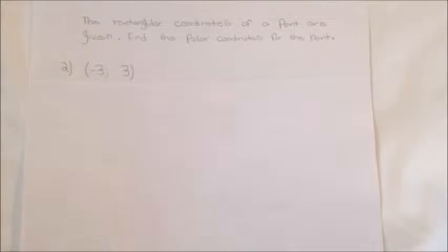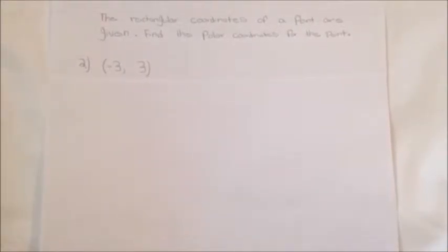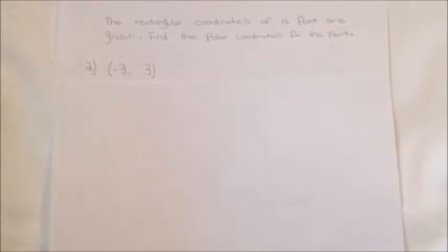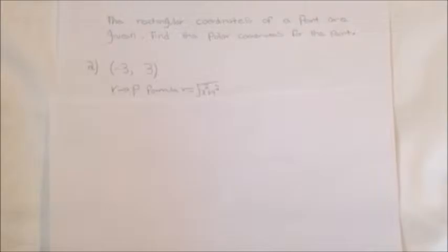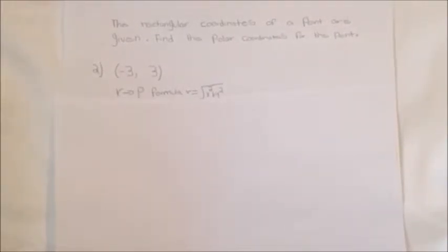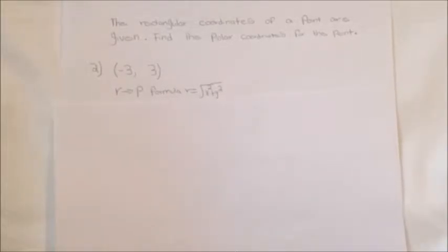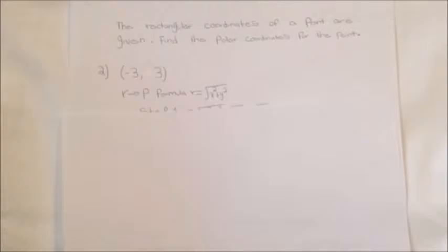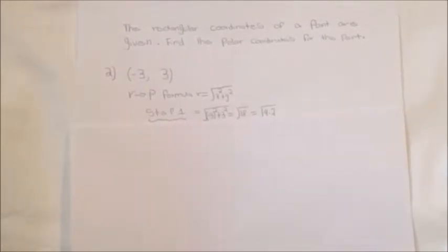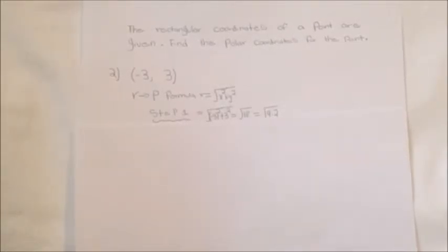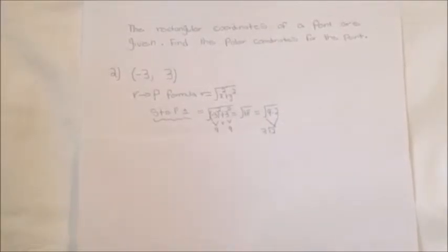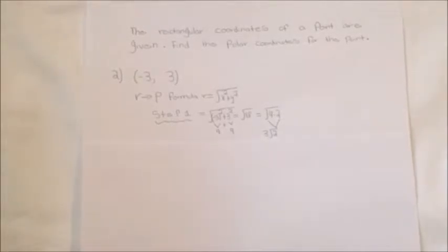The rectangular coordinates of a point are given; find the polar coordinates. We are given x equals negative 3 and y equals 3. The formula for rectangular to polar is r equals the square root of x squared plus y squared. Plugging in, we get the square root of negative 3 squared plus 3 squared, which equals the square root of 18, broken down as the square root of 9 times 2, giving us 3 square root of 2.